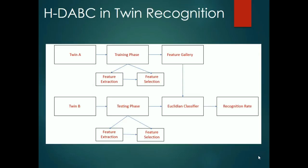Once the employed bees phase is initialized, the positions of the new food sources are identified and the fitness of each food source is updated. Once the update is done, the onlooker bees phase is initialized. Then the food sources are chosen based on their fitness and the position of each individual bee is updated.